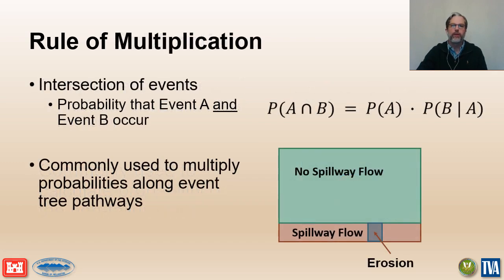The probability for the intersection of events is calculated using the rule of multiplication. It is commonly used in risk analysis to calculate the probability of failure and the risk estimate for a potential failure mode by multiplying the probabilities of all the events along the event tree pathway that make up the failure mode. In this example, the probability of failure would be equal to the probability of spillway flow multiplied by the probability of erosion occurring given that spillway flow has occurred.